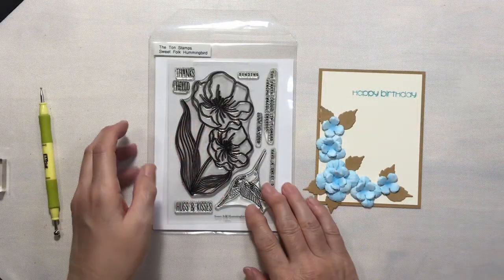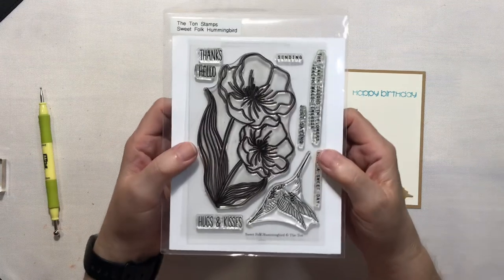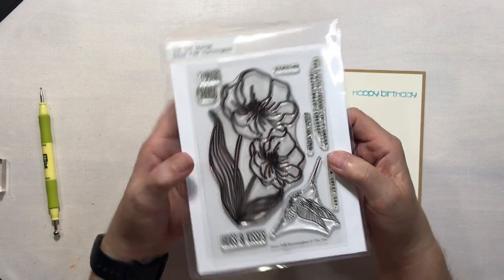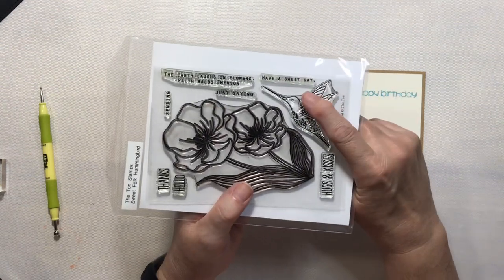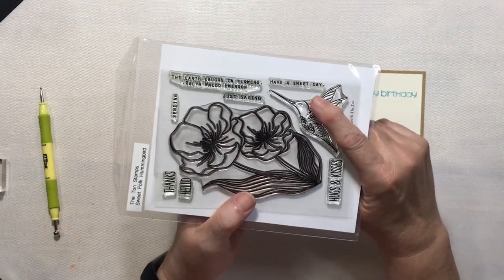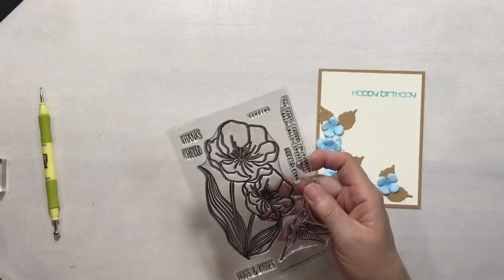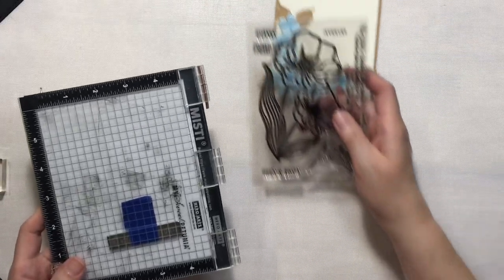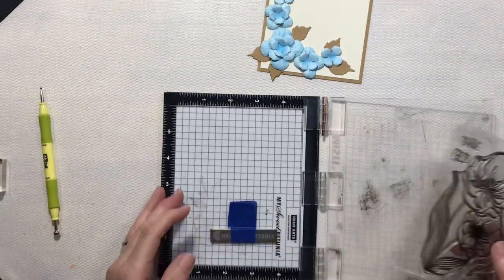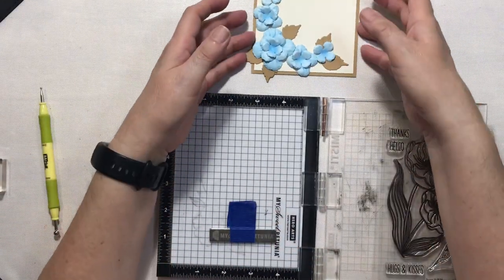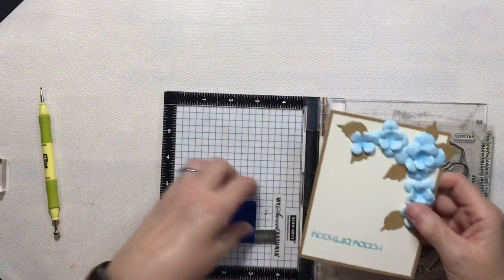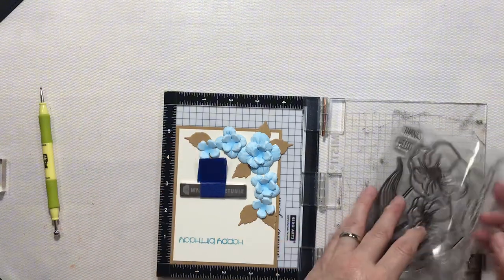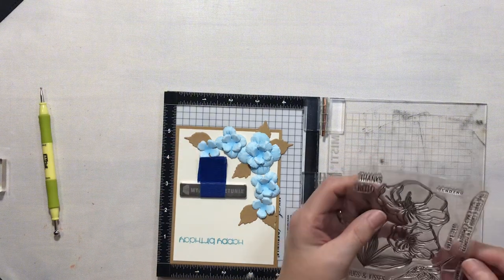So I went through all of my stamp sets and I found this one from The Ton Stamps - it is Sweet Folk Hummingbird. And there is just a tiny little saying, "have a sweet day," and I think that would fit perfectly on this card. So I'm going to go ahead and bring my mini MISTI back in. And because I have stuff hanging off the edge we're going to have to turn this upside down and work, so that will be interesting.